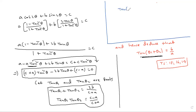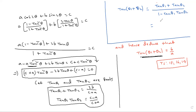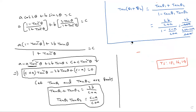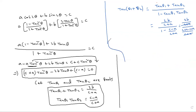Now apply the formula for tan(θ₁ + θ₂). Using the tan addition formula: tan(A + B) = (tan A + tan B) / (1 − tan A·tan B). So tan(θ₁ + θ₂) = (tan θ₁ + tan θ₂) / (1 − tan θ₁·tan θ₂) = [2b/(c + a)] / [1 − (c − a)/(c + a)]. Simplifying the denominator: (c + a − c + a) / (c + a) = 2a/(c + a). The (c + a) cancels.